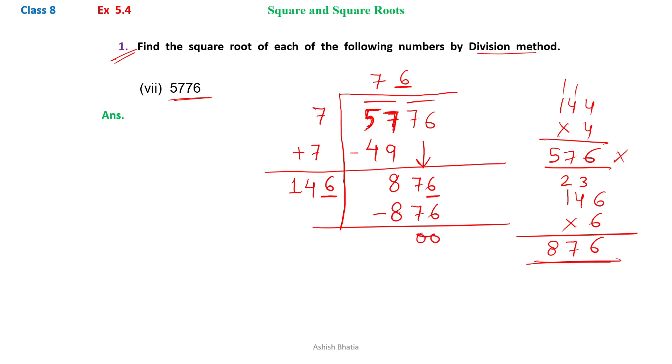So after subtraction, we get 0 here. Now the required square root is 76. So we can write down √5776 equals 76.